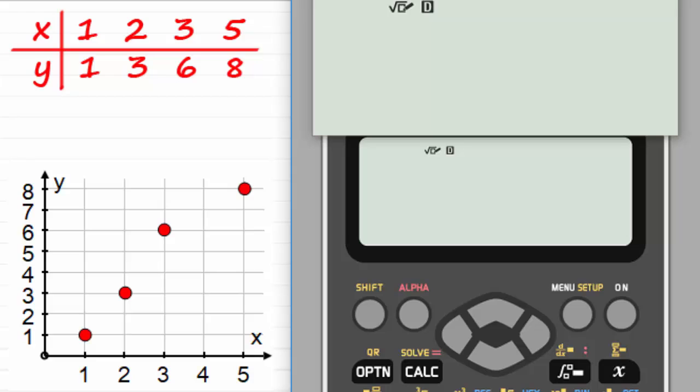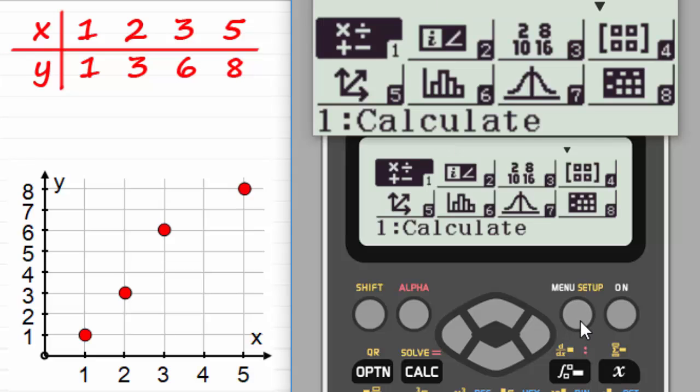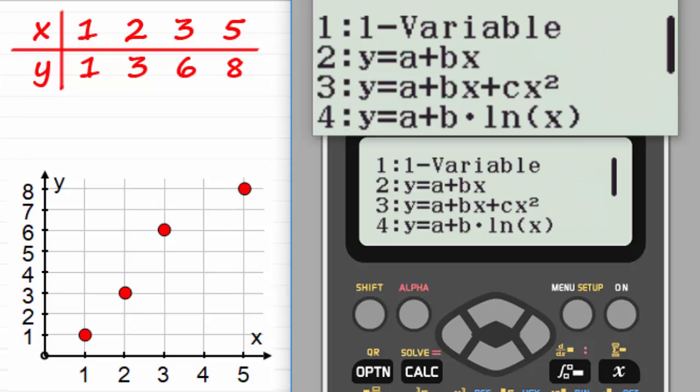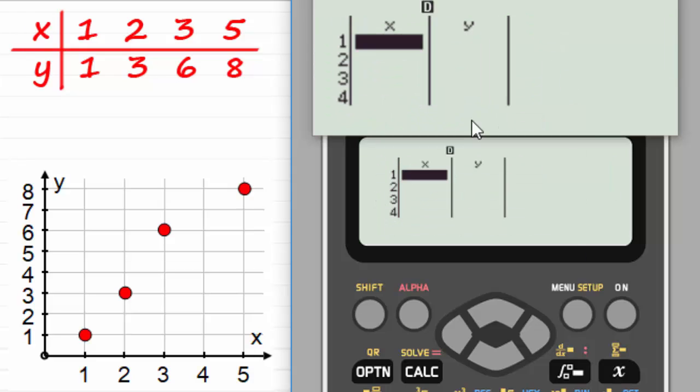We need to make sure we put this in the statistics mode. For this calculator we need to hit the menu button and select option 6. If we select option 6, the statistics menu, we now go on to this one here, number 2, which is for two variables x and y. We select 2 and it brings up this table of values where we can input our points, the x's and the y's.